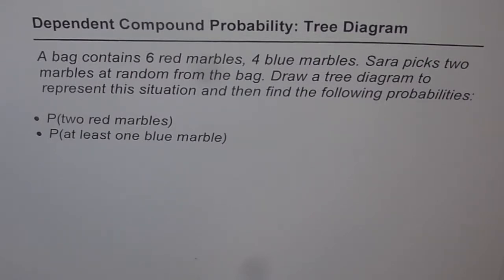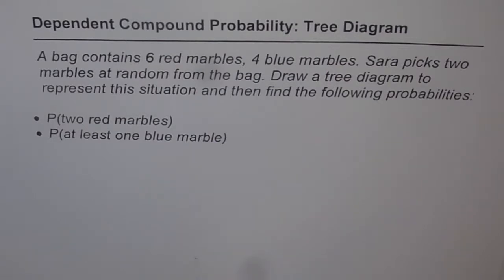A bag contains 6 red marbles and 4 blue marbles. Sarah picks 2 marbles at random from the bag. Draw a tree diagram to represent this situation, then find the following probabilities: the probability of getting 2 red marbles, and the probability of getting at least 1 blue marble.